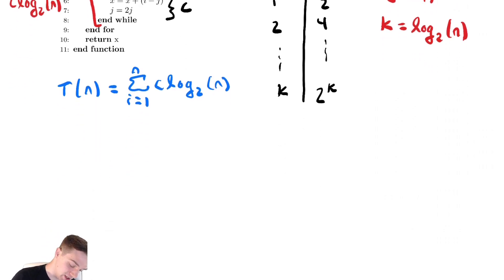So this is equal to, we have n copies of c log n. So this is c n log base 2 of n.